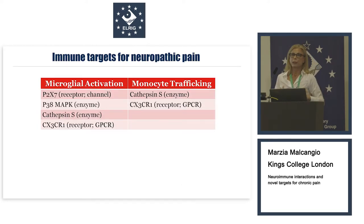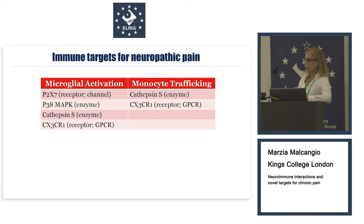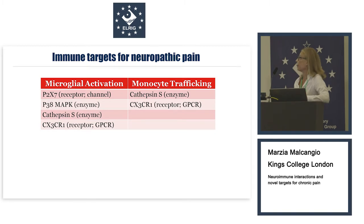These studies offer potential new targets — alternatives to neuronal targets and alternatives to opioids — where one could target P2X7, p38, a receptor, a channel, an enzyme, or a GPCR expressed by microglia for the control of neuropathic pain. In the case of chemotherapy, we propose targets expressed by monocytes: cathepsin-S and CX3CR1.